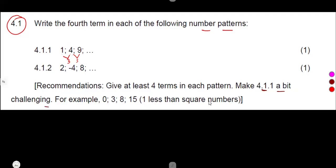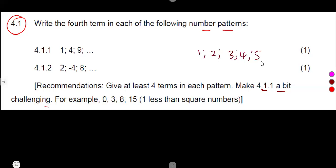What is actually happening there? We saw that the difference is not constant and there is no constant ratio. Figure out — let's say there are numbers 1, 2, 3, 4, 5, 6, 7. I want you to see these numbers. 1 is a perfect square. 4 is also a perfect square. 9 is a perfect square.